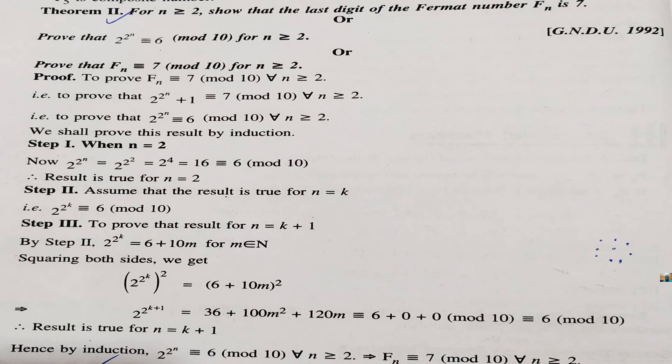For n greater than or equal to 2, if we have n greater than or equal to 2, the last digit of every Fermat number is 7. After n greater than 2, if f3, f4, f5, in each Fermat number, last digit is 7. So, we have to show that fn is congruent to 7 mod 10. It is also written like this.